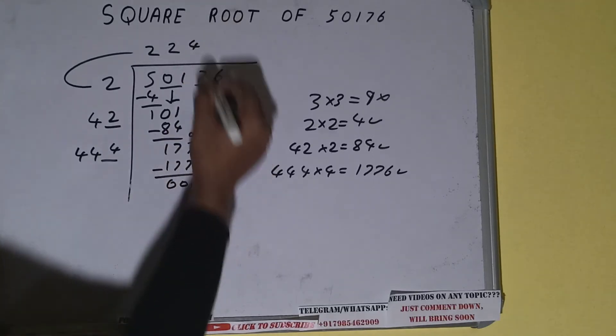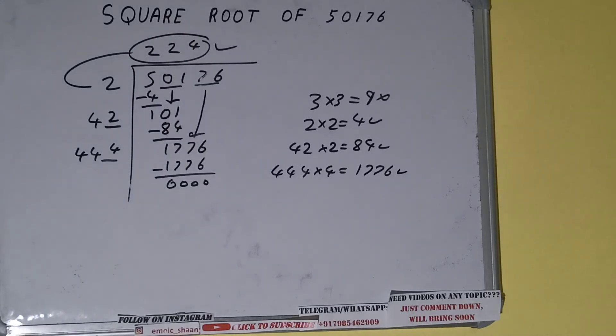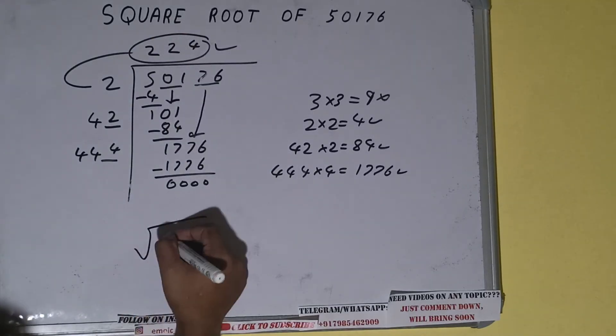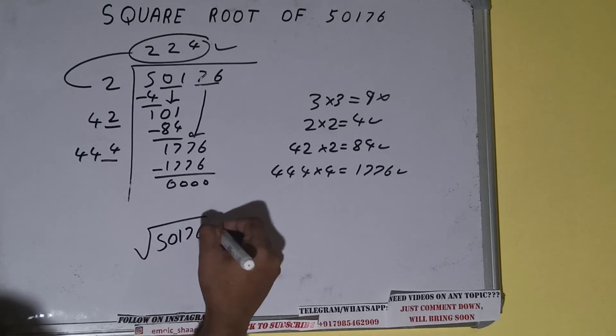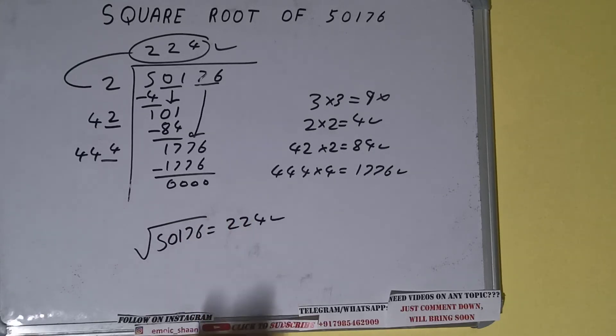So the square root of 50176 will be 224. That's it. If you found the video helpful, please do hit the like button, do consider subscribing, and thanks for watching.